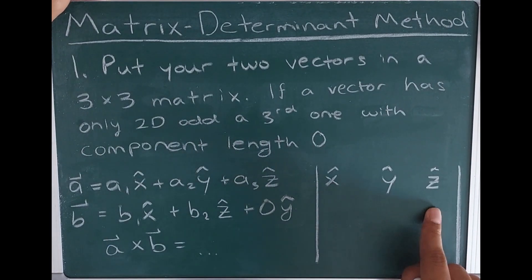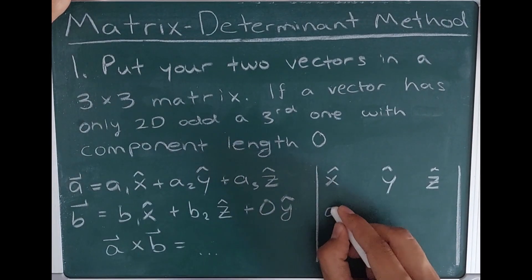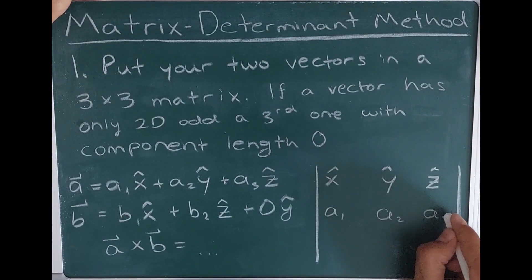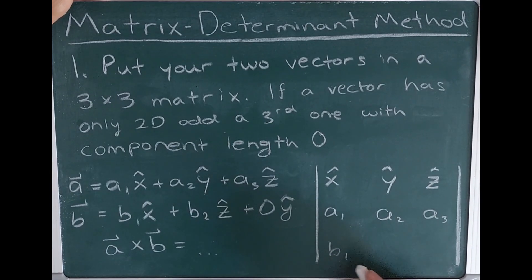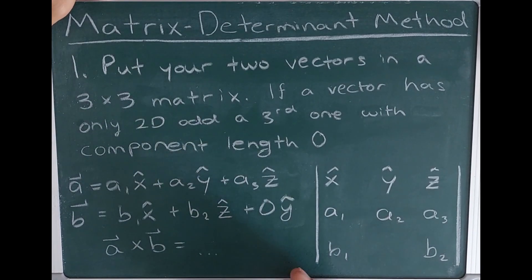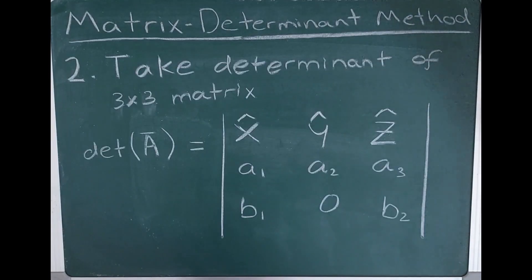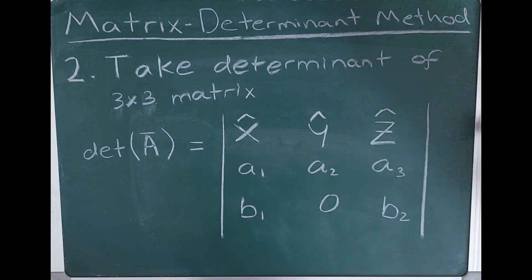The second row of the matrix is each of the respective components of the first vector A: A1 in the x-hat direction, A2 in the y-hat direction, and A3 in the z-hat direction. I'll do the same thing for vector B: B1 in the x-hat direction, B2 in the z-hat direction, and since we don't have a B3 in the y-hat direction — this is only a two-dimensional vector — we know that component length is zero, so I'll put a zero in that y-hat spot. Now I have my 3x3 matrix.